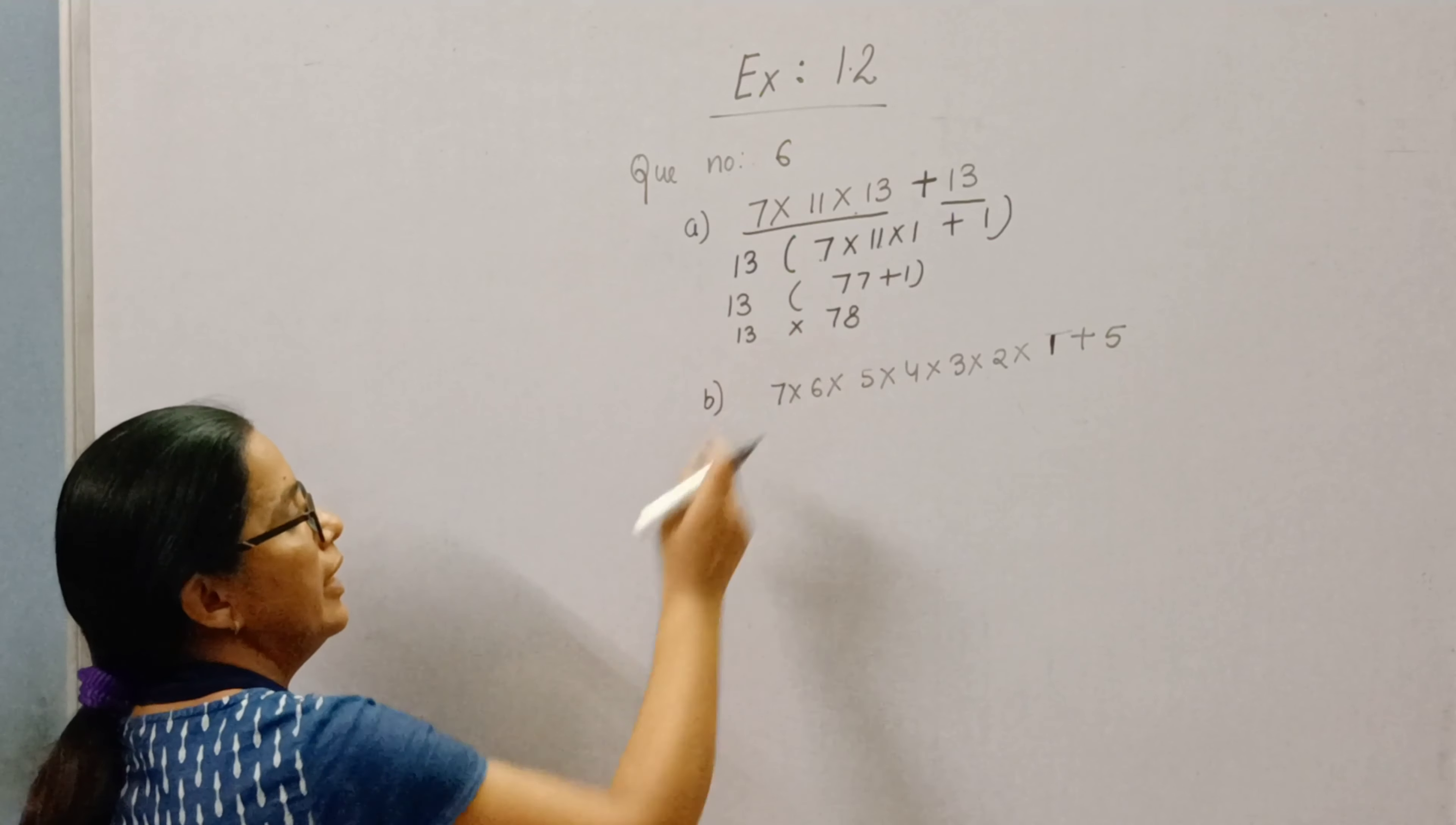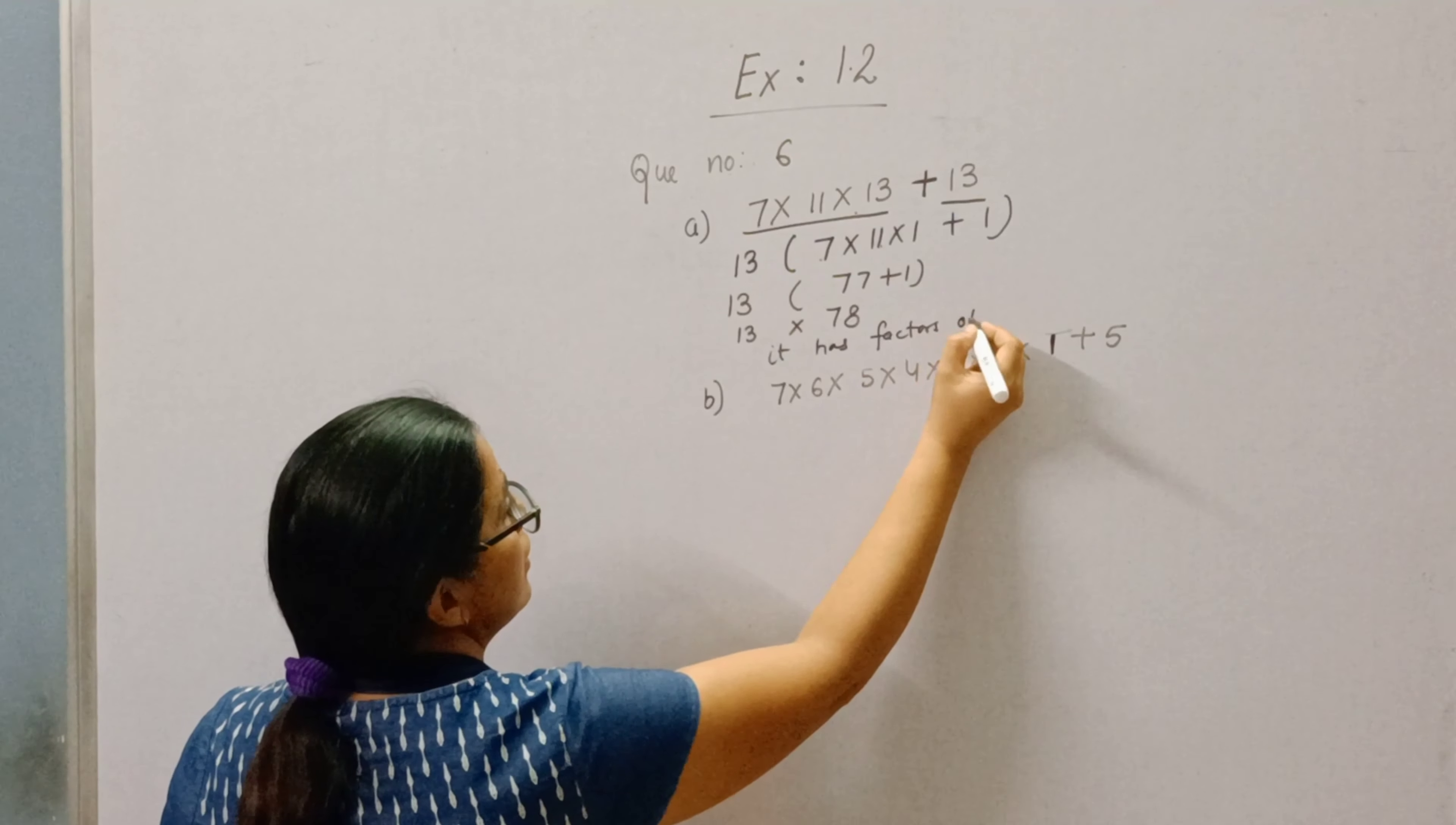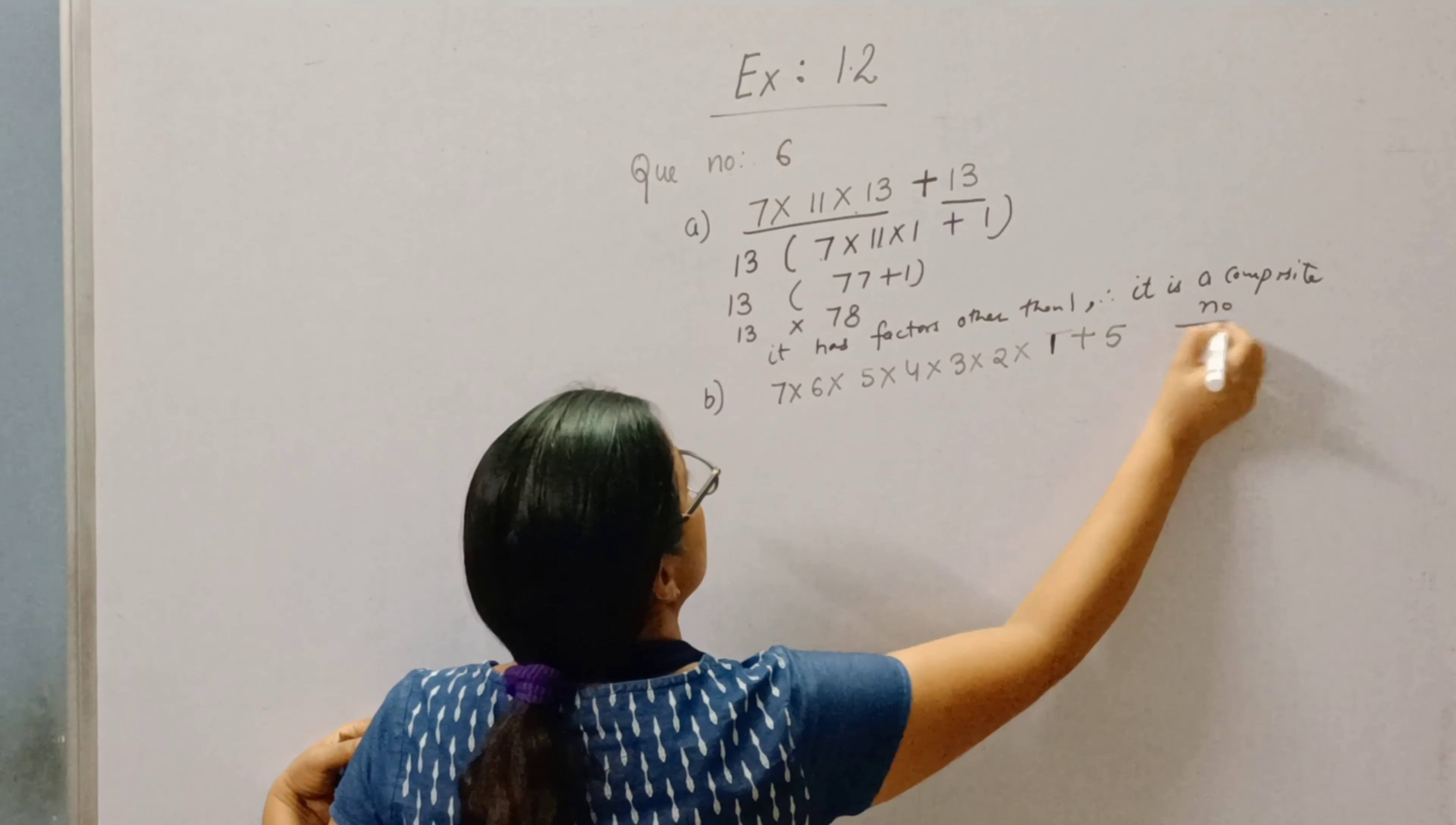Now you can see it has factors other than 1 also. There are two factors. Because it has factors other than 1, therefore it is a composite number. This we have to prove. So this is a composite number.